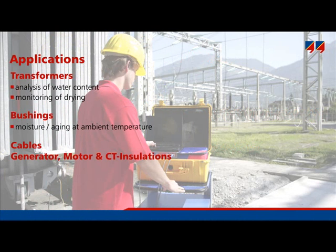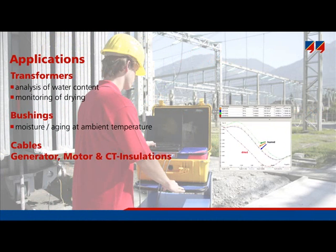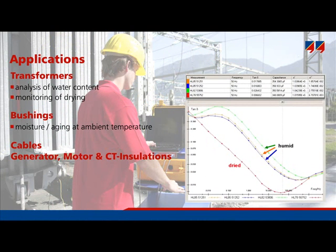The diagram shows how moisture affects the dissipation factor of resin impregnated paper bushings. Its value was initially measured in the factory and is largely dependent on the environment in which the bushings are stored. The dissipation factor will be high for humid conditions or low if the air is dry.